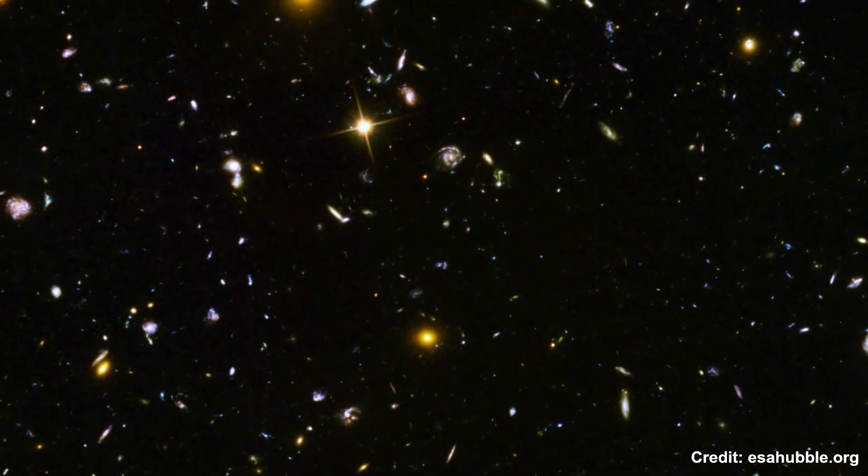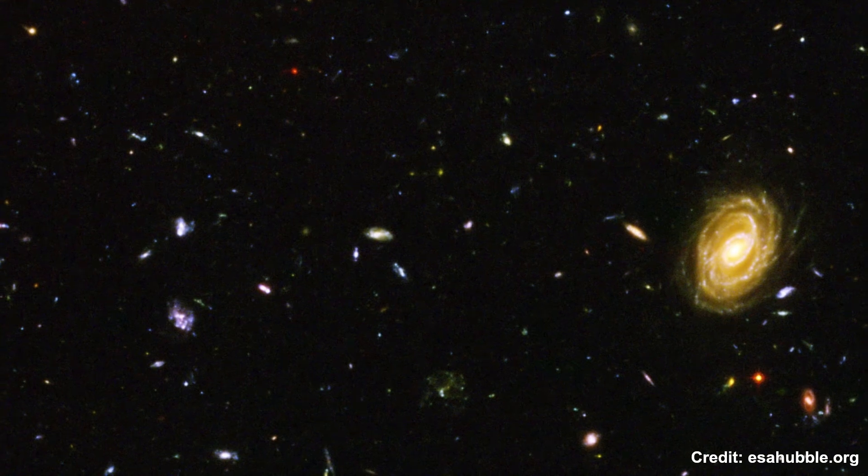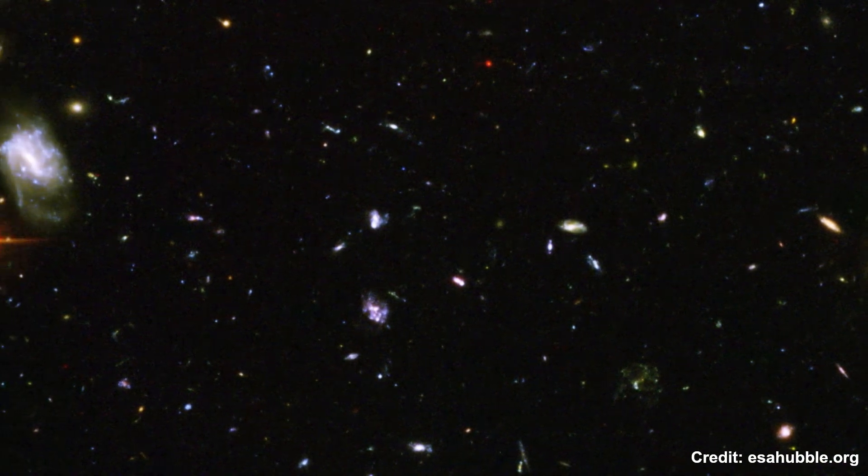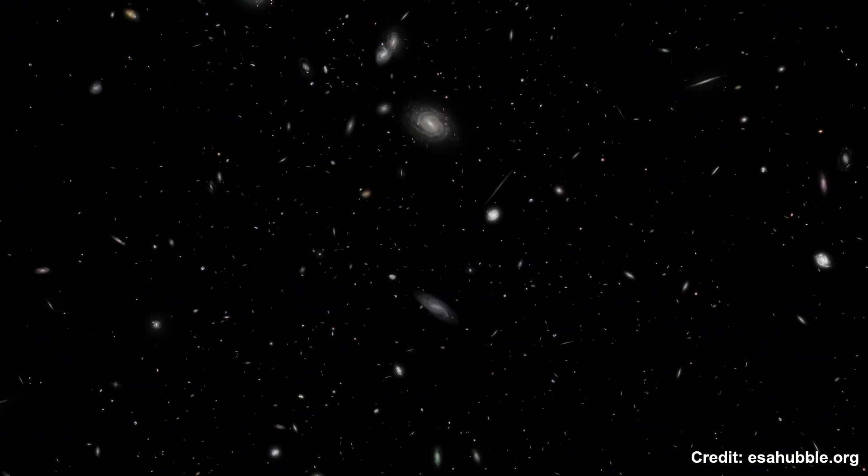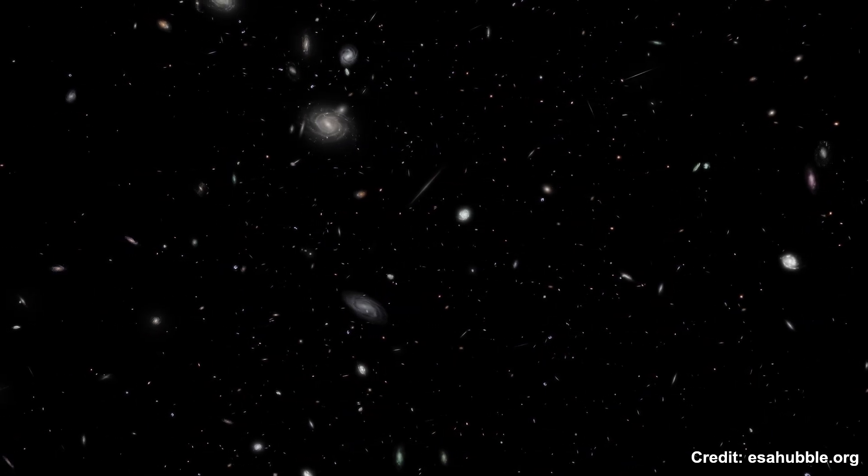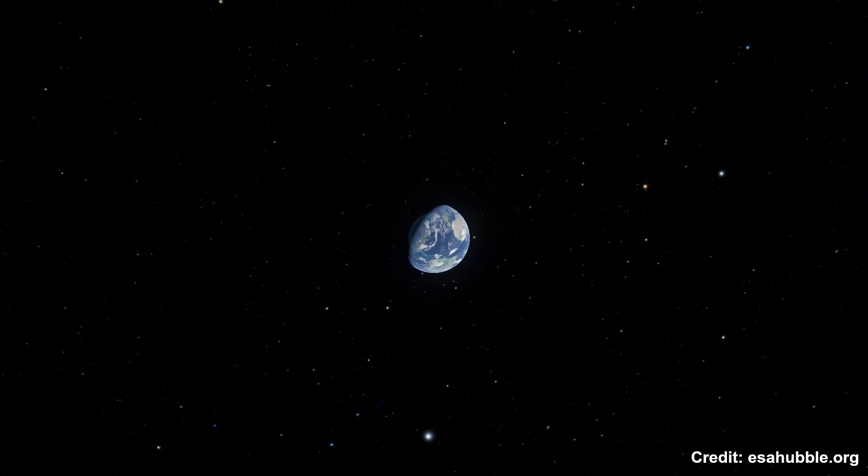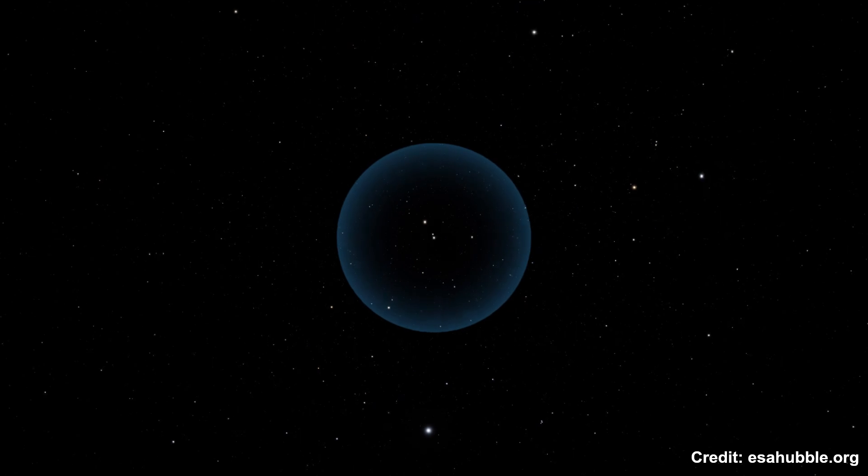In 2016, with improved imaging techniques and deeper observations like the Hubble Ultra Deep Field, astronomers revised the number. They now believe the observable universe contains as many as 2 trillion galaxies. Each one of these galaxies can host anywhere from millions to trillions of stars, many of which likely have planets orbiting them.